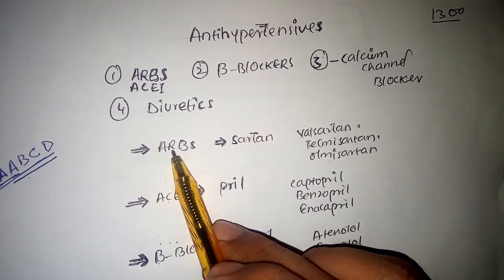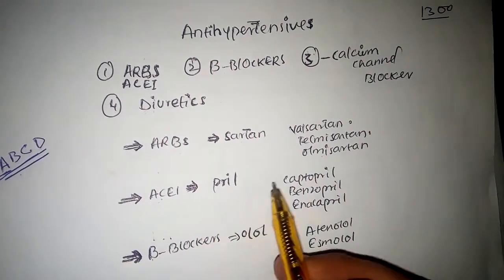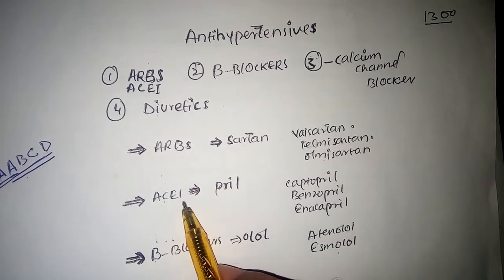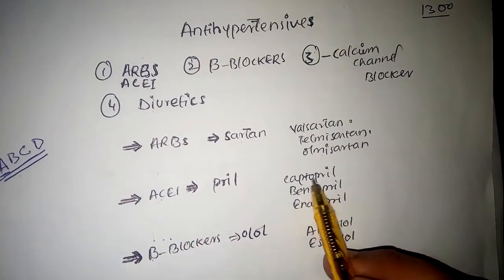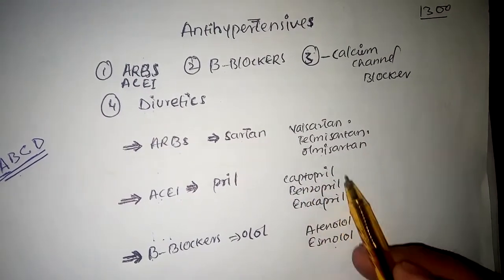ACE inhibitors can be remembered by pril because the drugs included in this class are captopril, benazepril, and enalapril - these all end with pril.